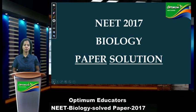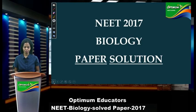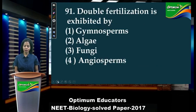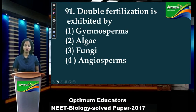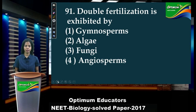Thank you. The next paper we are going to solve is NEET 2017 biology paper. Let's begin with the first question: 'Double fertilization is exhibited by.' Out of these 4 plants, which category shows double fertilization?